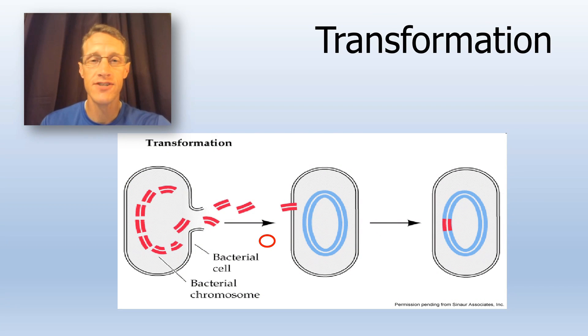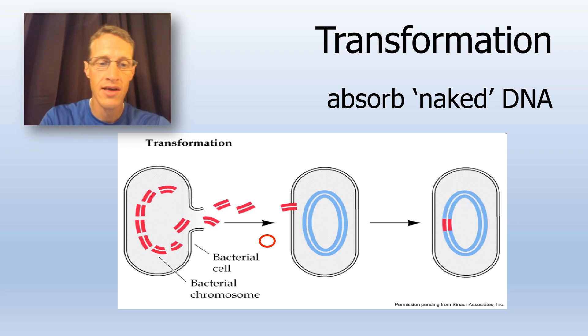The third and final kind of gene transfer among bacteria is called transformation. And a simple definition of transformation would be cells absorbing naked DNA from their surroundings. Naked meaning there's no covering like a membrane or nucleus around that DNA.